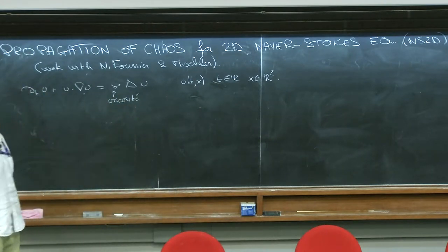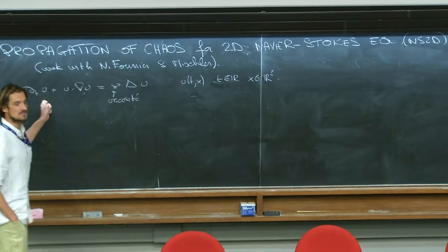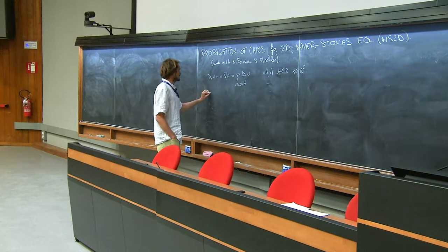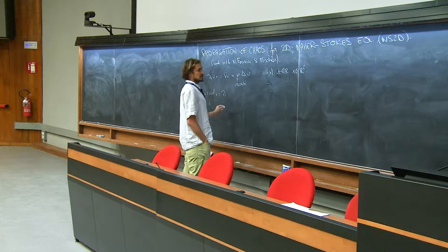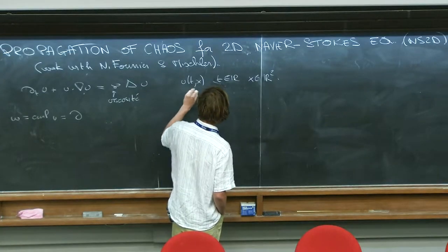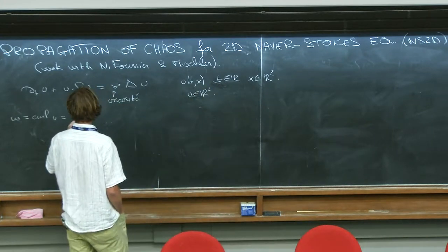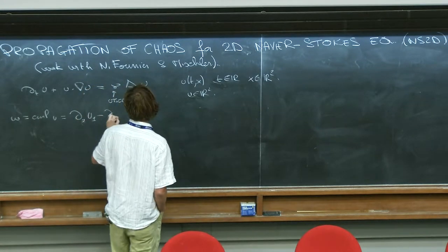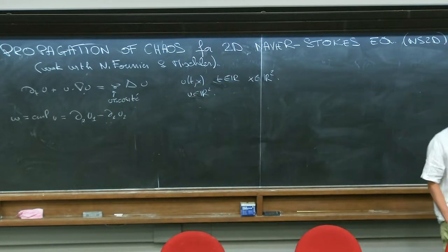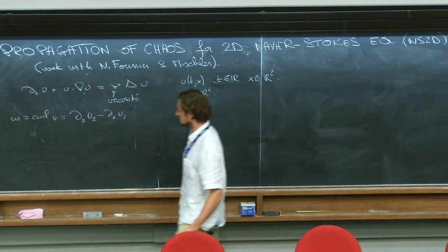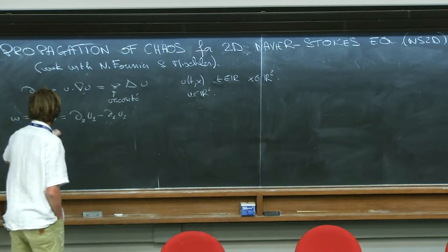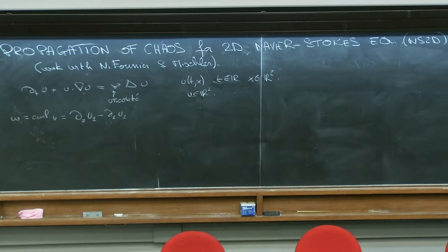If you look at W, the curl of U in 2D — meaning the derivative of the first component with respect to the second minus the derivative of the second with respect to the first — the equation for W is still the same. The vorticity is still advected by the velocity field U, and there is still diffusion of W. The key point is that U depends on W in a non-local way, because you have to recover U from the curl.